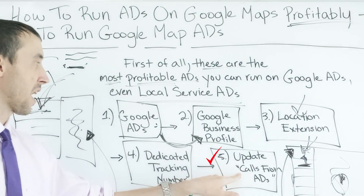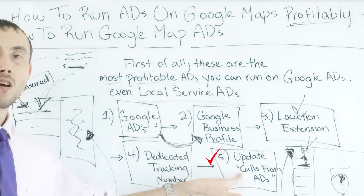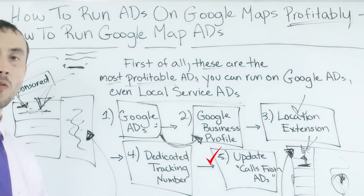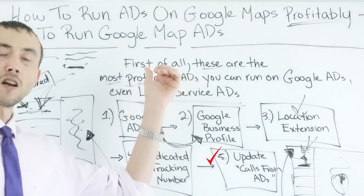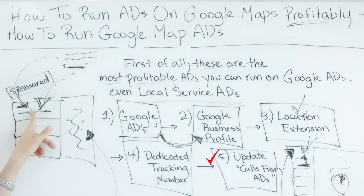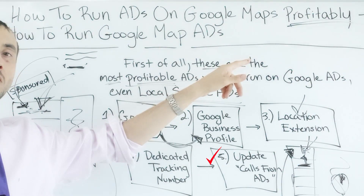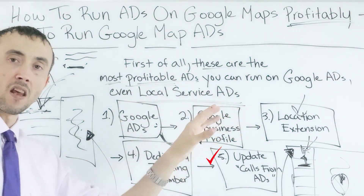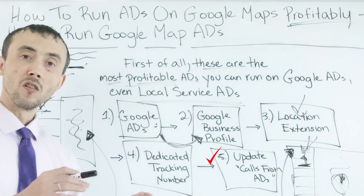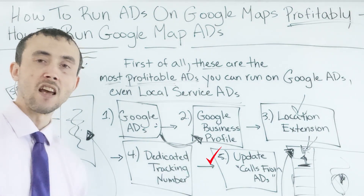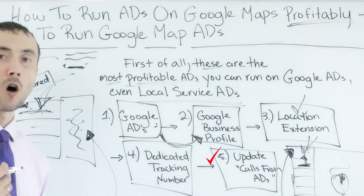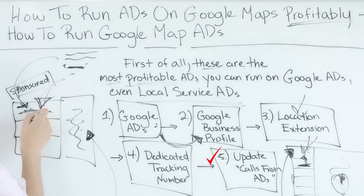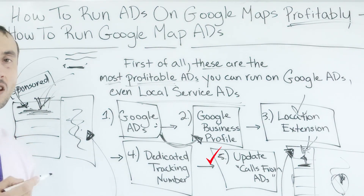I recommend Call Rail. Set up the Call Rail integration with Google Ads, then insert that tracking number in the 'calls from ads' section on your Google Business Profile. Every call you get on the sponsored map listing will get fed into your Google Ads account. You'll be able to see which campaign and which keyword it came from, and more importantly, the algorithm uses that data to optimize your ads — recognizing over time that this sponsored listing is getting a good call rate.